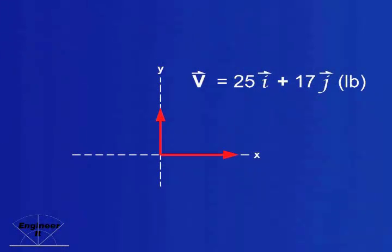You can also find the angle and magnitude when given vector components. Here, vector v equals 25i plus 17j pounds. This means the component in the direction of unit vector i, the x axis, is 25 pounds.